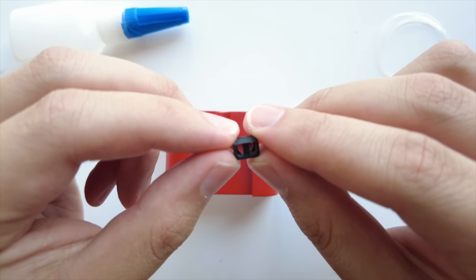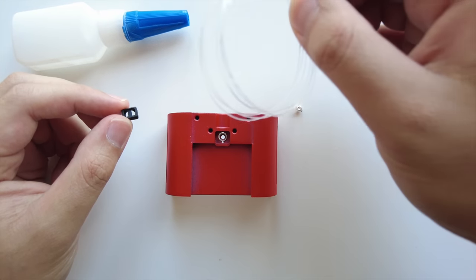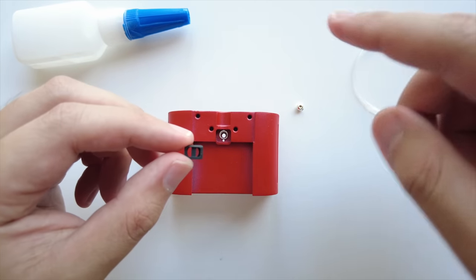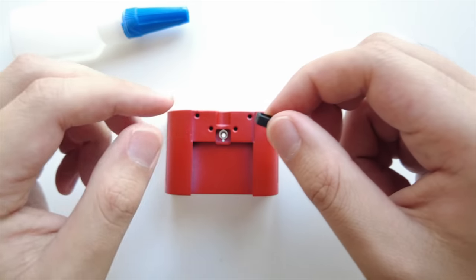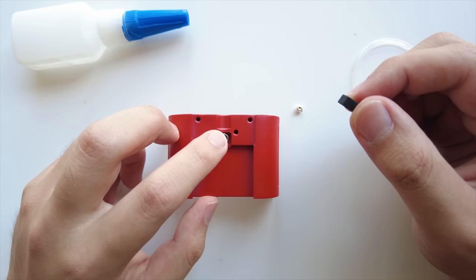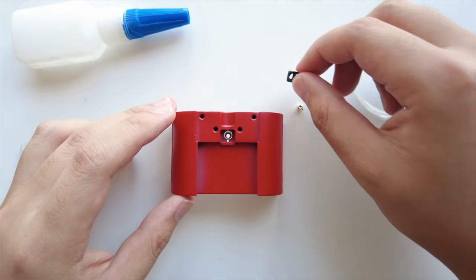You can see it has two holes there. Take your nylon line and thread it through both sides of that. What we're going to do is put those two ends of the nylon line through the spring here, and that's going to act as our trigger.